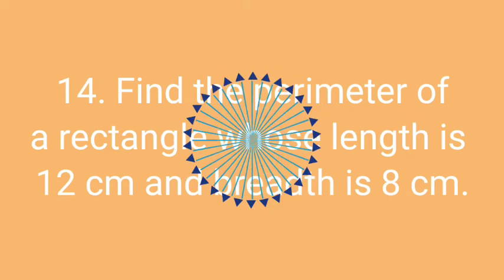Question number fourteen: Find the perimeter of a rectangle whose length is 12 cm and breadth is 8 cm. Think the answer of this question within 10 seconds.